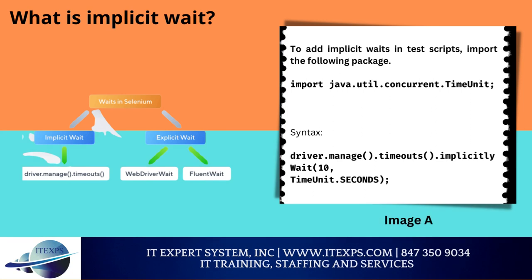What is implicit wait? Implicit wait directs the Selenium WebDriver to wait for a certain measure of time before throwing an exception. Once this time is set, the WebDriver will wait for the element before the exception occurs. Once the command is in place, implicit wait stays for the entire duration for which the browser is open. Its default setting is zero, and the specific wait time needs to be set by the following protocol. To add implicit waits in test scripts, import the required package and set the implicit wait after instantiating the WebDriver instance variable.